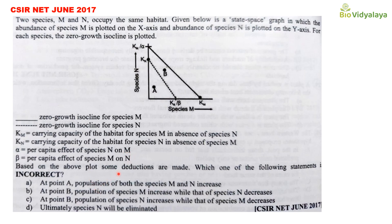Based on the above plot, some deductions are made, and we have to find which statement is incorrect. Option A: at point A, the population of both species M and N increases. Option B: at point B, the population of species M increases while that of species N decreases. Option C: at point B, the population of species N increases while that of species M decreases. Option D: ultimately, species N will be eliminated.